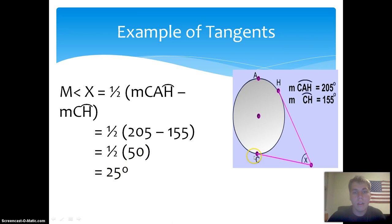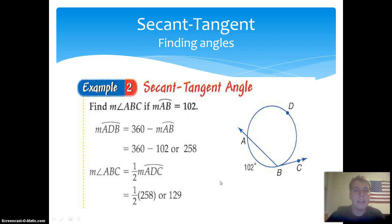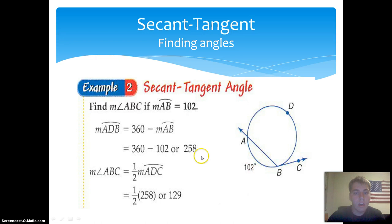The last theorem is the secant-tangent theorem. The measure of arc ADB equals 360 minus the measure of arc AB. Since we know the measure of arc AB is 102 degrees, we do 360 minus 102, which equals 258 — the measure of arc ADB.